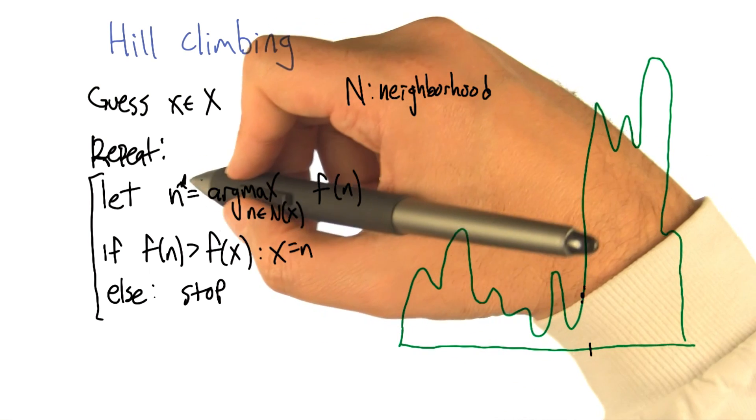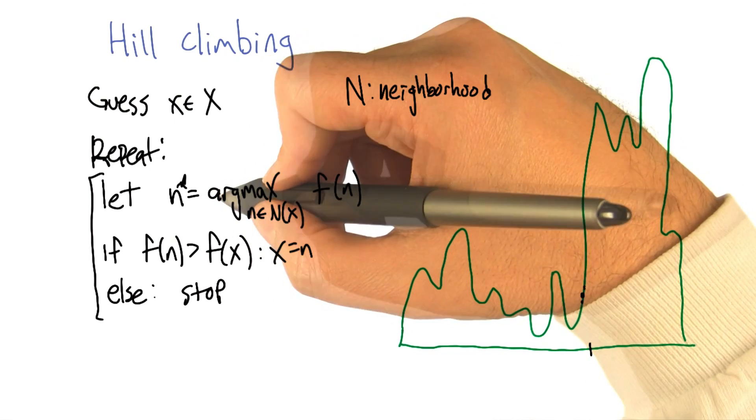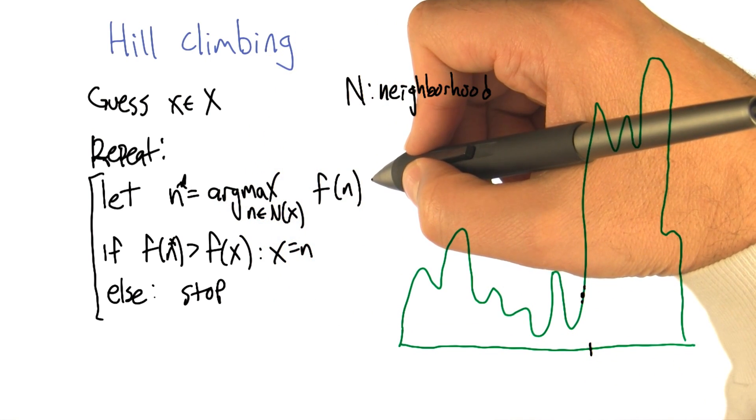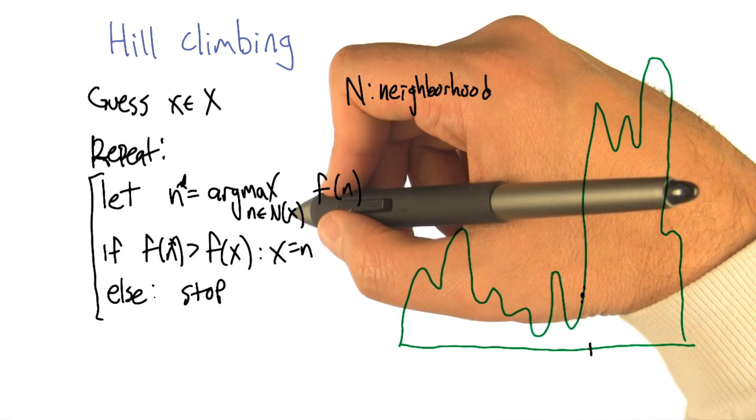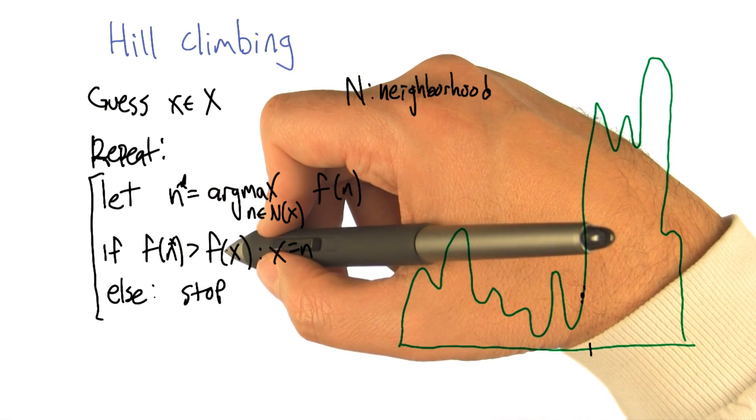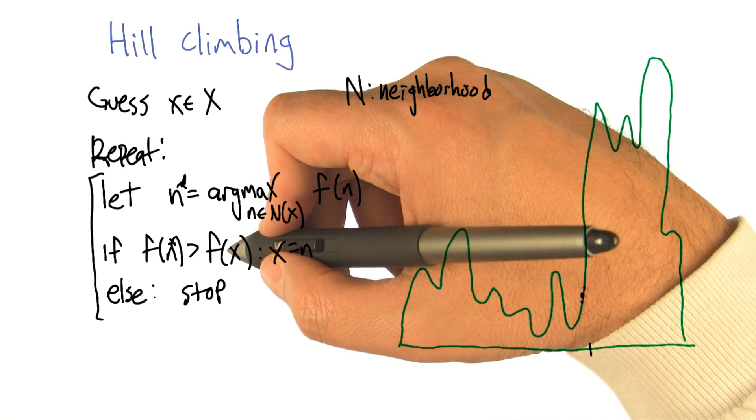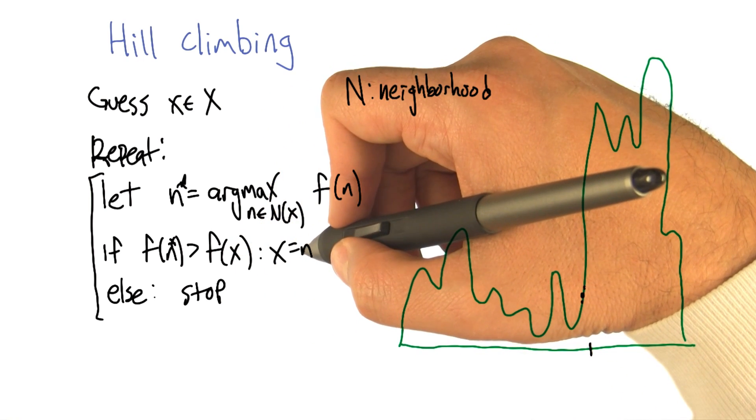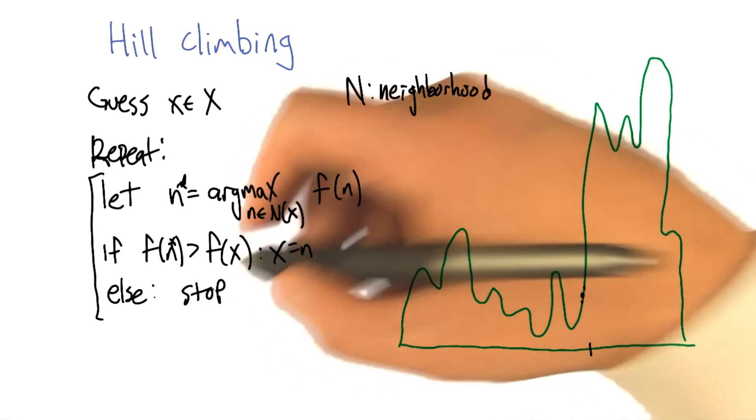So what hill climbing says is, find the neighbor that has the largest function value. This is steepest ascent hill climbing. And if that neighbor has a higher function value than we are now, then move to that point. Otherwise, we stop because we're at a local optimum.